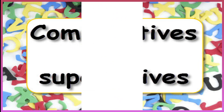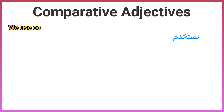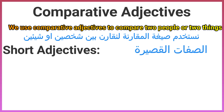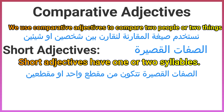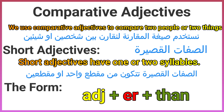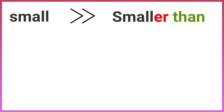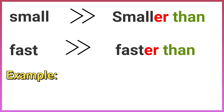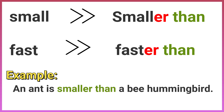Comparative adjectives: we use comparative adjectives to compare two people or two things. Short adjectives — those with one or two syllables — follow the form: adjective + er + than. For example: small → smaller than; fast → faster than. Example sentence: an ant is smaller than a hummingbird.